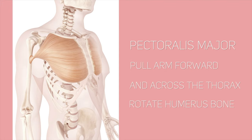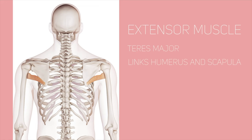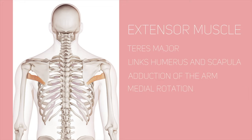The pectoralis major also functions to rotate the humerus bone medially and to perform abduction on an arm that is raised. The second type is called the extensor muscle. It includes the teres major which is linked to the humerus and scapula and functions to cause adduction of the arm in addition to medially rotating it.